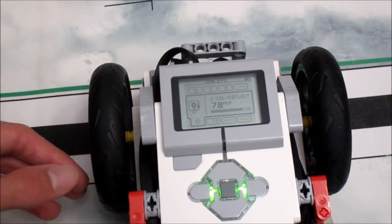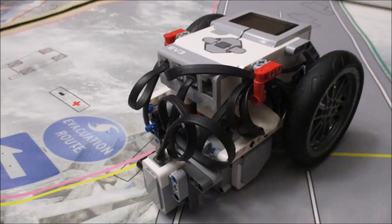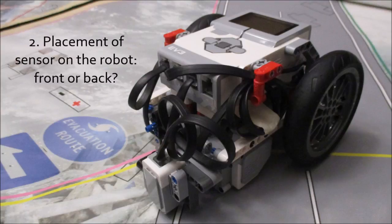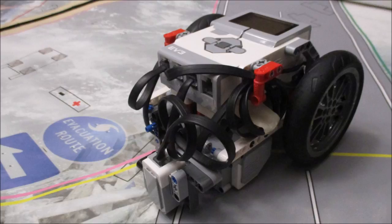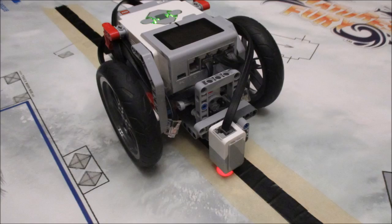The second fundamental principle relates to where on the robot the sensor goes in terms of front and back in relation to the drive motors. I always say that the color sensor doing the line following should be ahead of your drive wheels.